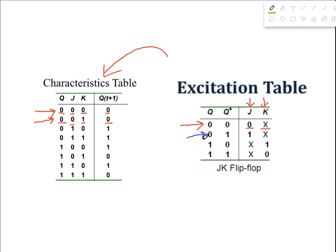For the next combination where present state is 0 and next state is 1, we find those rows in the characteristic table. In both of these rows J=1, so we clearly write 1 for J. However, K is 0 in one case and 1 in the other, so we write don't-care in the place of K.